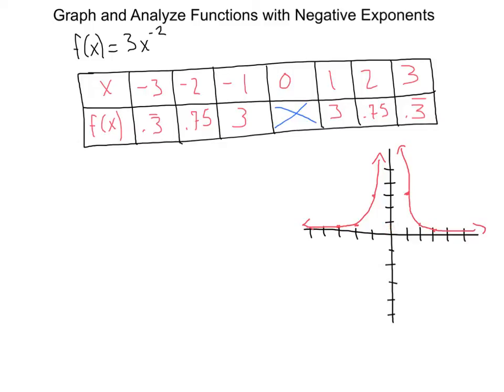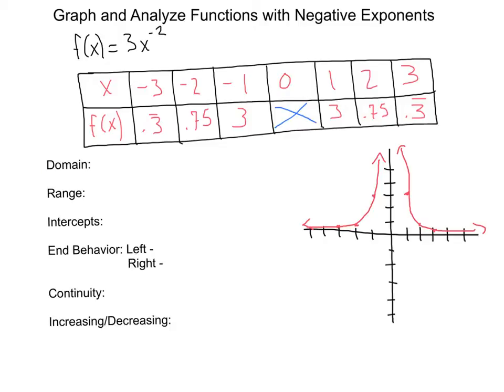Let's go ahead and analyze the components of this graph. Let's start with our domain. Here I notice that we have x values for everything except at zero. X equals zero, we don't have any value, but we do have for everything else. So our domain is going to be from negative infinity to zero union with zero to positive infinity.